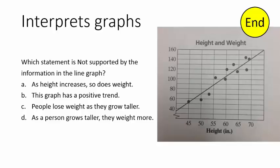Alright, so we've got to interpret this graph. Which statement is not supported by the information in the line graph? I just read each statement one at a time and see if the information on the graph matches. As height increases, so does weight. What's happening here is as people are getting taller, we're slowly going up in weight as well. So each dot is somebody's height and weight — the taller they are, the heavier they are. That makes sense. So A is good.